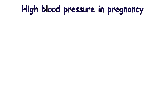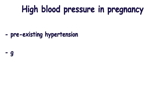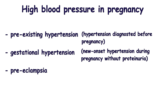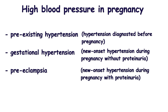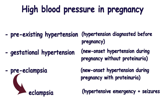High blood pressure in pregnancy is classified into three types: pre-existing hypertension, gestational hypertension, and preeclampsia. Gestational hypertension is defined as new-onset hypertension during pregnancy without protein in the urine. Preeclampsia is defined when a pregnant woman has high blood pressure and protein in the urine. Preeclampsia can be complicated by a life-threatening condition called eclampsia, which is a hypertensive emergency with seizures and proteinuria.